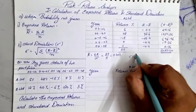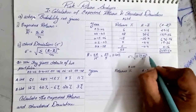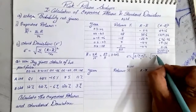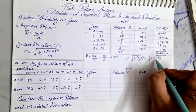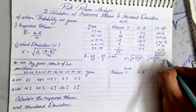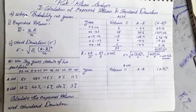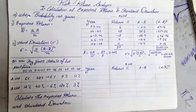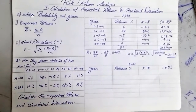Now let us find the standard deviation. The formula is the square root of Σ(r − r̄)²/n, which is the square root of 2085.20 divided by 5. When you divide and press the square root, we get the final answer as 20.42. So we finished with part A: expected return of 11.4% and standard deviation of 20.42.